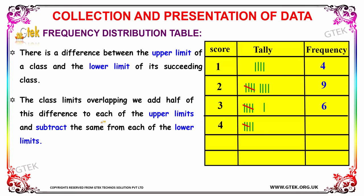In a frequency distribution table, we consider the difference between the upper limit of one class and the lower limit of the next consecutive class. If the class limits are overlapping, we add half of this difference to each of the upper limits and subtract the same from each of the lower limits. Here you can see a sample frequency distribution table.